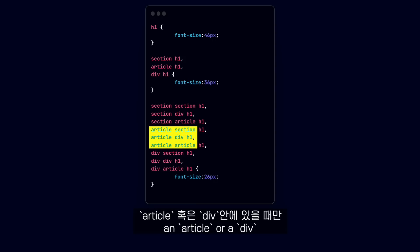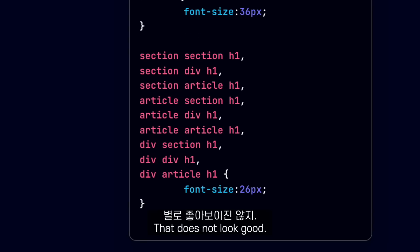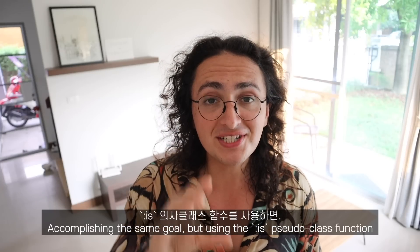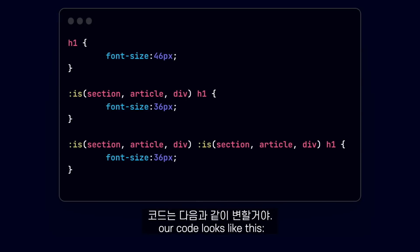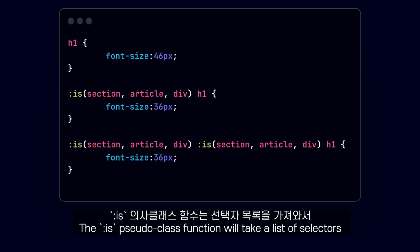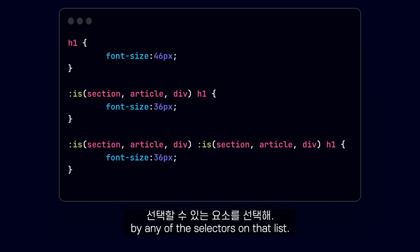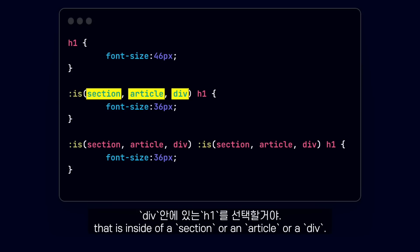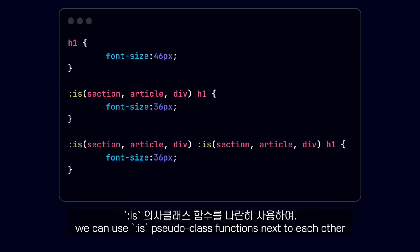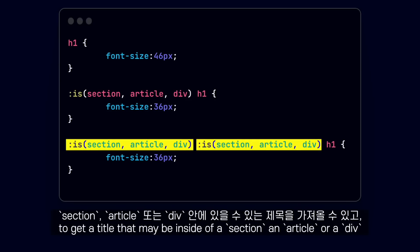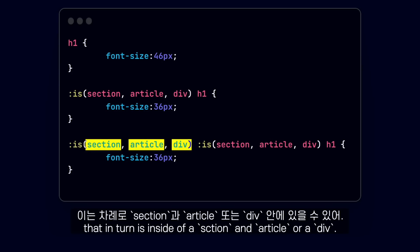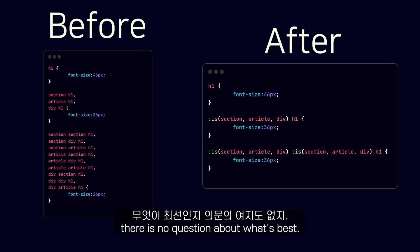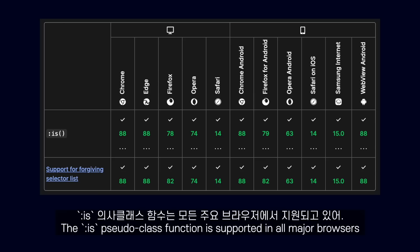That does not look good, and this was the problem the :is() pseudo class function was created to solve. Accomplishing the same goal using :is(), our code looks much cleaner. The :is() pseudo class function takes a list of selectors and selects any of the elements that can be matched by any selector on that list. So in the first case, it will select the h1 inside of a section, an article, or a div. And just like in the second case, we can use :is() functions next to each other to get a title inside nested containers. If we compare the code before and after, there is no question about what's best. The :is() pseudo class function is supported in all major browsers.